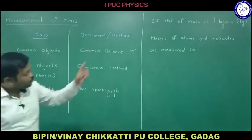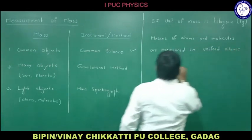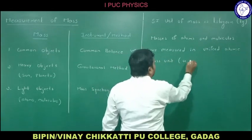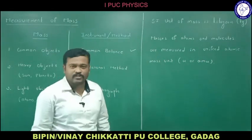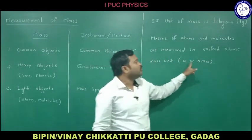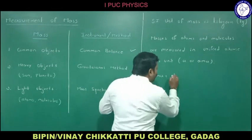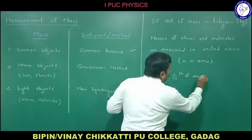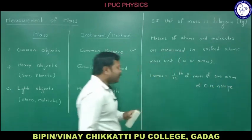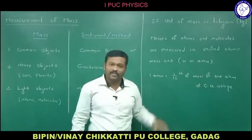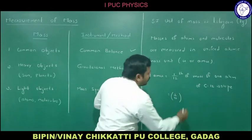The unit used to measure the masses of atoms and molecules is the unified atomic mass unit, written as u or amu. One atomic mass unit is equal to one-twelfth of the mass of one atom of the carbon-12 isotope. Let us calculate how much that is.